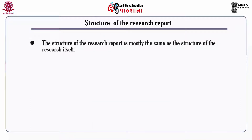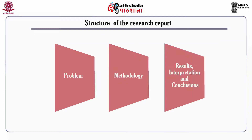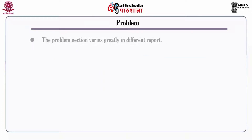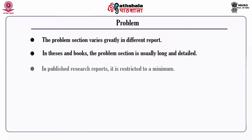The structure of the research report is mostly the same as the structure of the research itself. The common outline of the research report includes problem, methodology and results, interpretation and conclusions. The problem section varies greatly in different reports. In thesis and books, the problem section is usually long and detailed. In published research reports, it is restricted to a minimum.